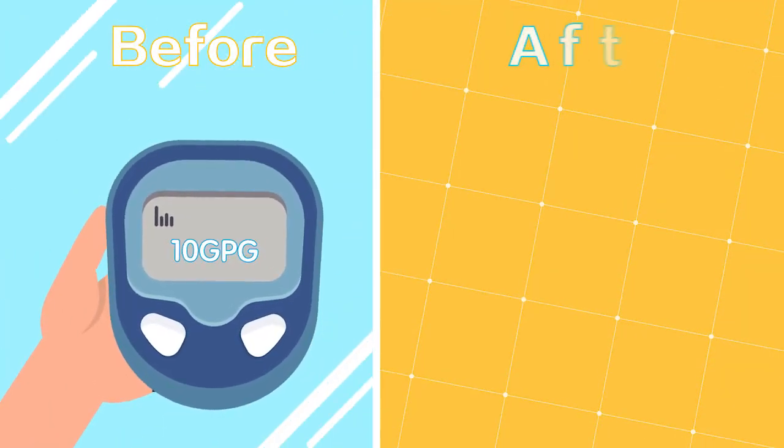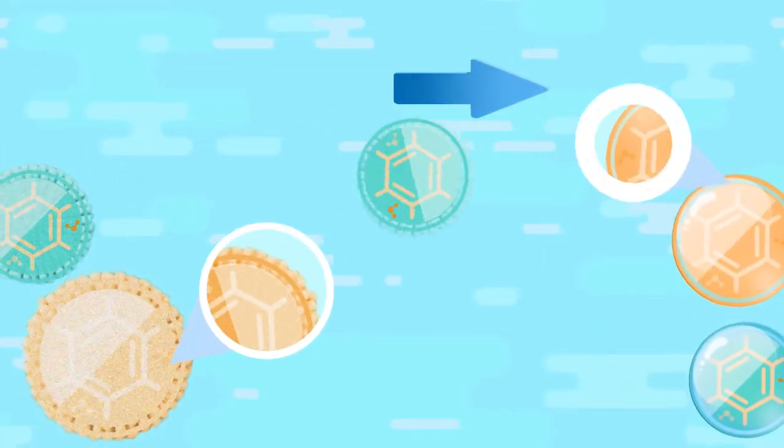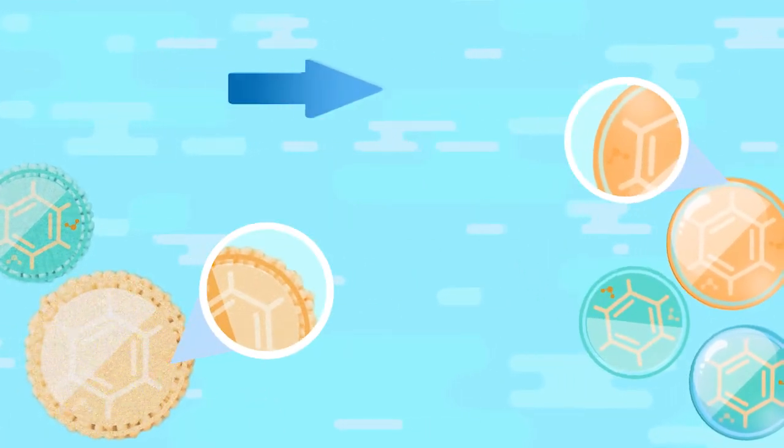5000E will not show any difference in the test of water hardness, but solves the troubles by changing the crystal structure and removing the existing limescale.